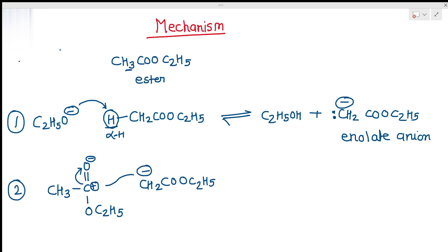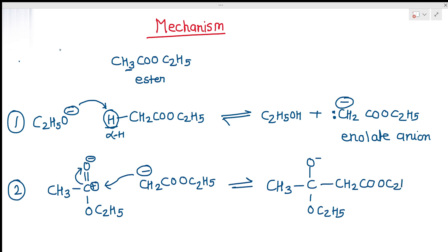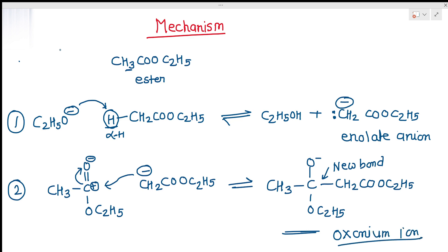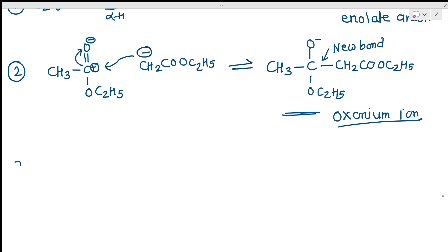The enolate anion ⁻CH₂COOC₂H₅ attacks the electrophilic carbonyl carbon of the second ester molecule. This gives an anionic intermediate with a new C–C bond formed between the two carbon atoms of the two different molecules — this is why it is called a condensation reaction. The intermediate carries a negative charge on oxygen and is called an alkoxide (oxanion) intermediate, with OC₂H₅ and CH₂COOC₂H₅ groups attached.